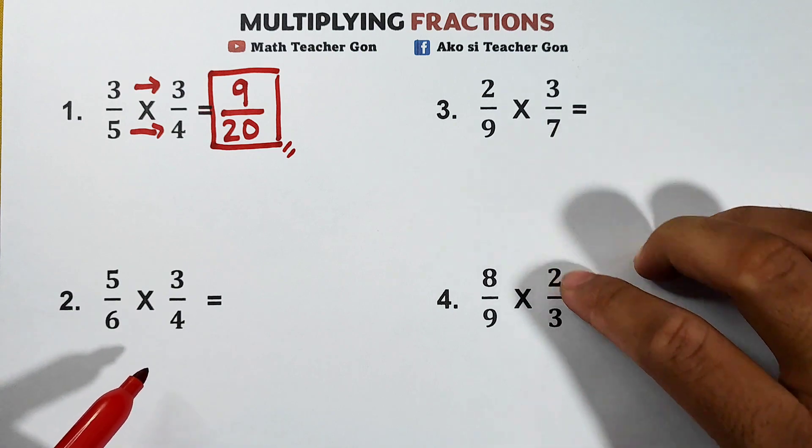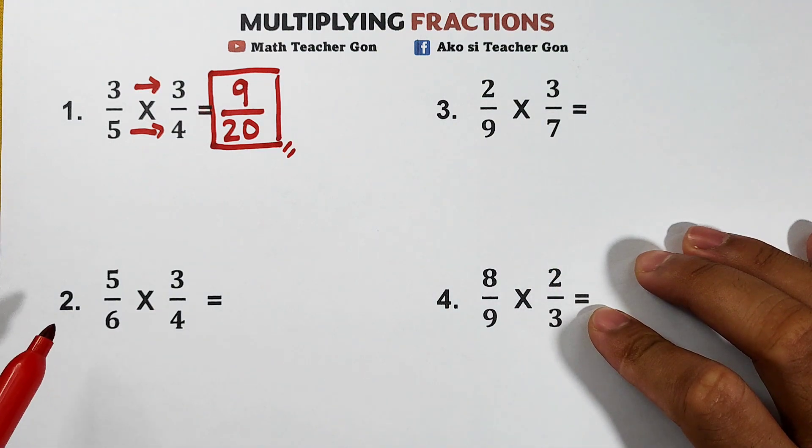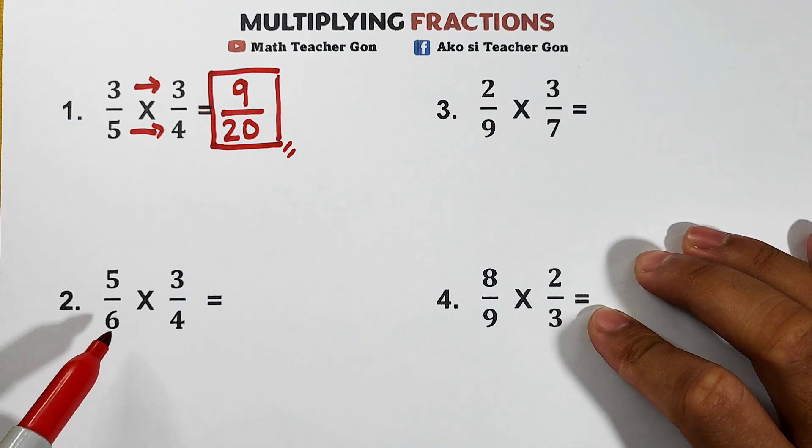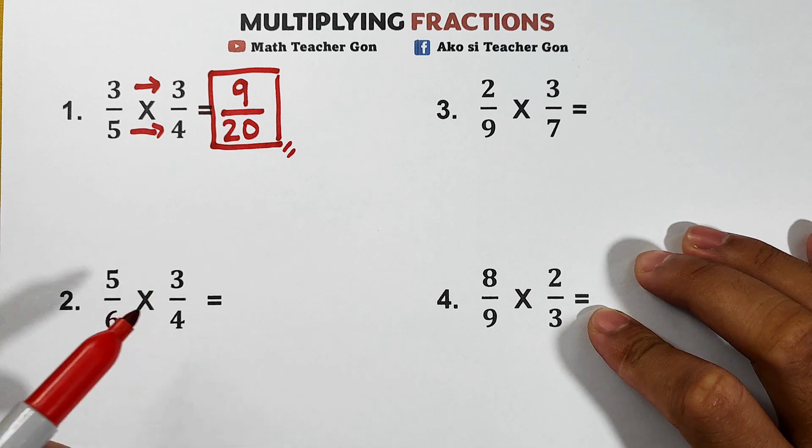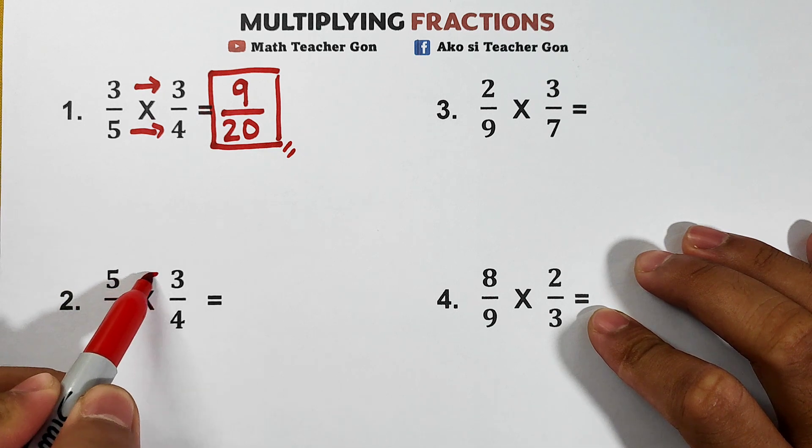Now let's move on with item number 2. In number 2, we have 5 over 6 times 3 over 4. Same process, multiply your numerators.